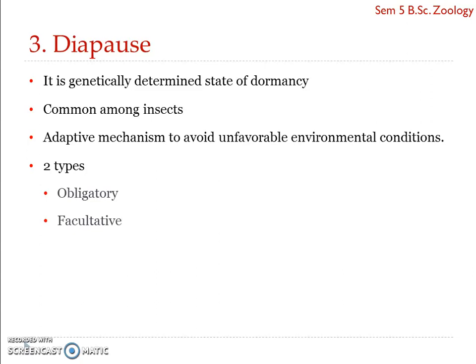It could also be triggered by a lack of food supply, drought, etc. Diapause begins long before the onset of unfavorable conditions and persists even after the disappearance of those unfavorable conditions. So it helps the individual to tide over unfavorable environmental conditions.